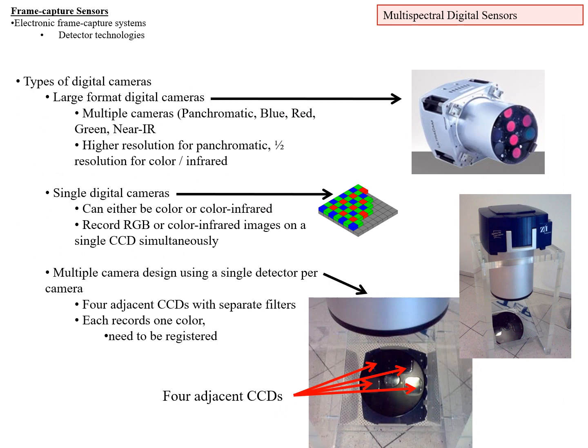For digital cameras, large-format systems exist. Some use multiple cameras — for instance, four or five cameras: panchromatic, blue, red, green, and near-IR — typically with higher resolution for panchromatic than for color or infrared. You might also have a single digital camera with the Bayer pattern, or a multiple-camera design using a single detector per camera — for instance, four adjacent CCDs with separate filters, each recording one color, which then need to be registered spatially to one another.